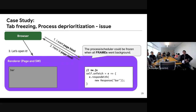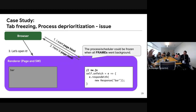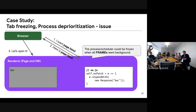But in this case there is a service worker, and the service worker can control multiple pages or multiple tabs that could be in different render processes. So if you deprioritize the process, those other frames cannot get the response very quickly because the process is deprioritized.